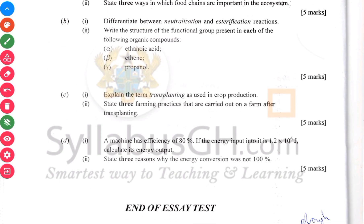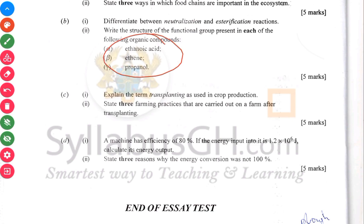Differentiate between neutralization reaction and esterification — formation of esters. Neutralization reaction has to do with when you have an acid and a base coming together. Another power topic: organic chemistry. Study organic chemistry before you come in to write. So we have ethanoic acid here — draw the structure of ethanoic acid, ethylene, and propanol.